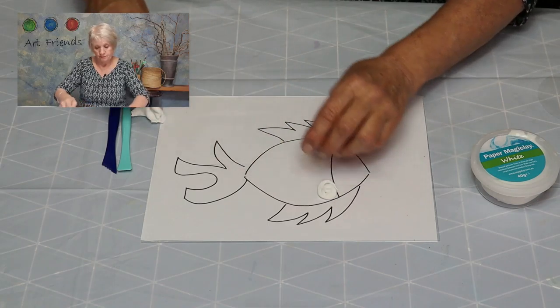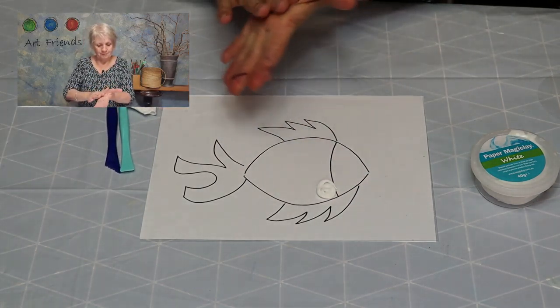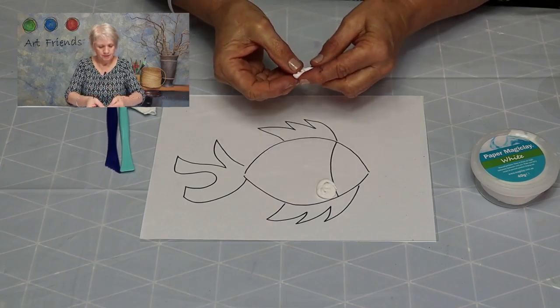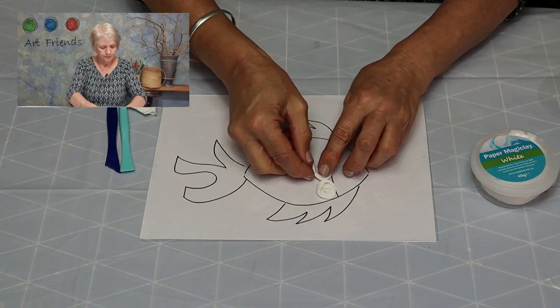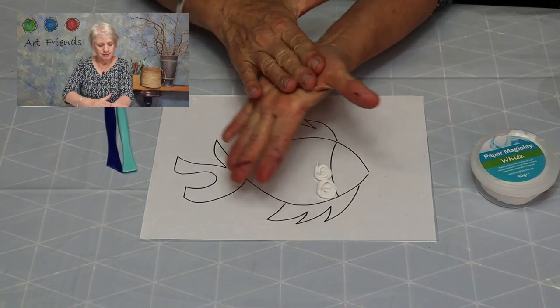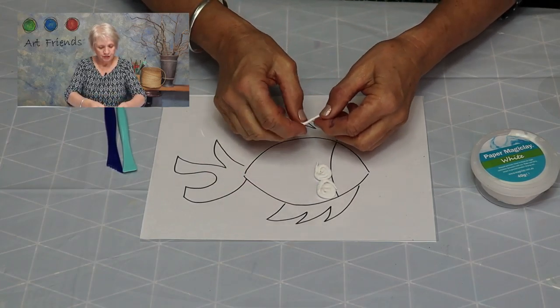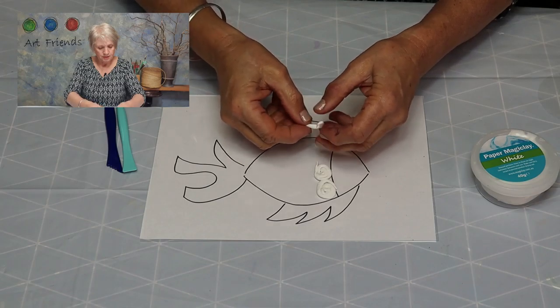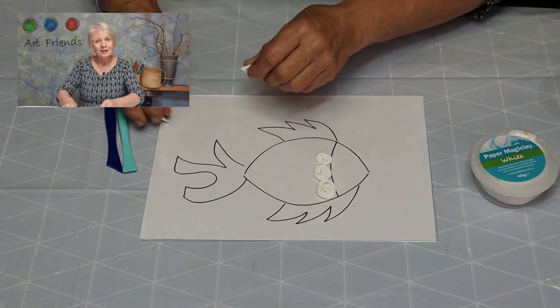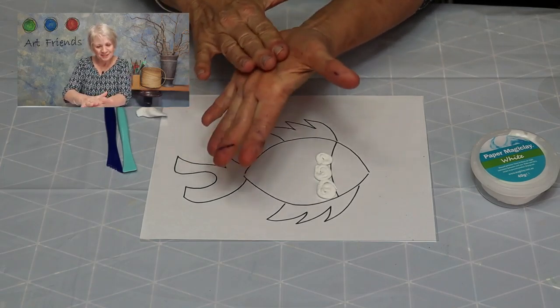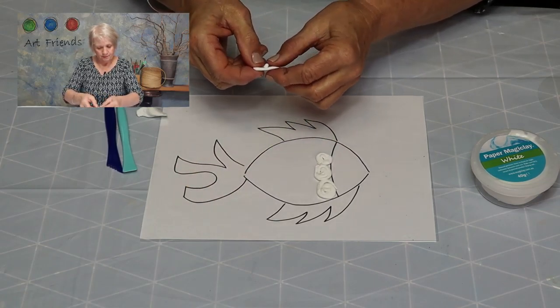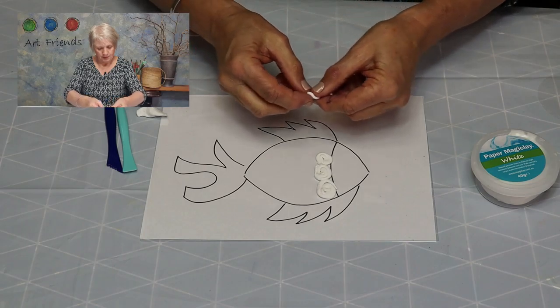We're going to keep rolling some little spirals. We're going to keep rolling some little spirals and just fill up the front of our fish with little tiny spirals. Okay? So join with me as you go along. Get some little spirals happening with your hand. Pop them in.